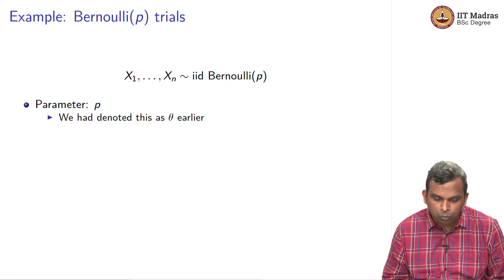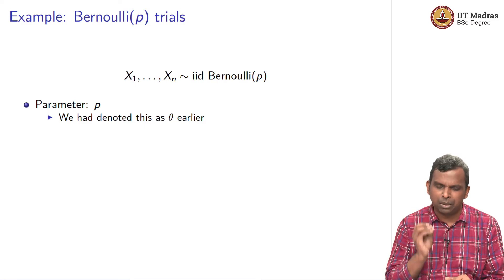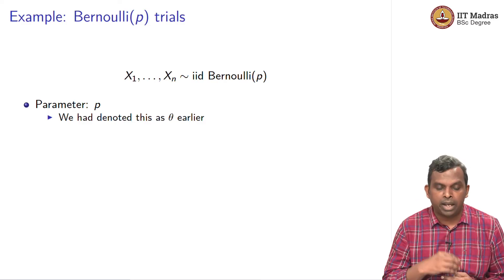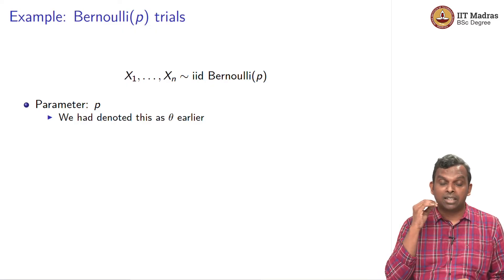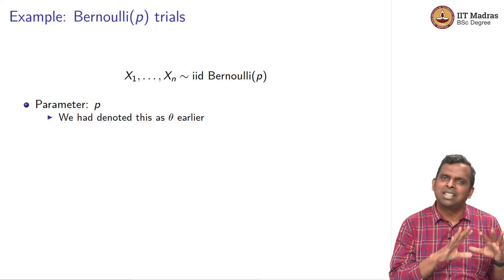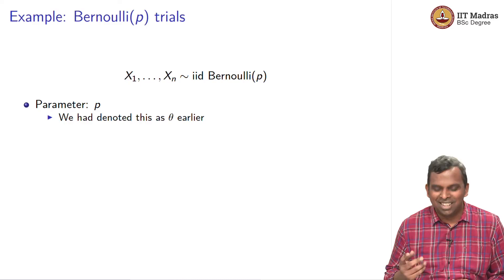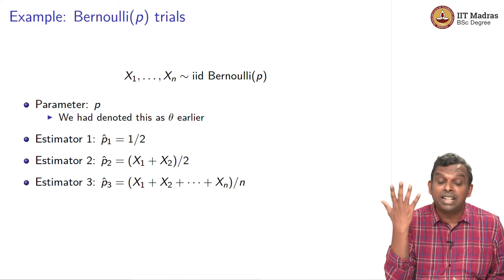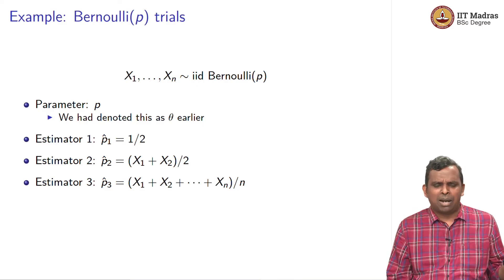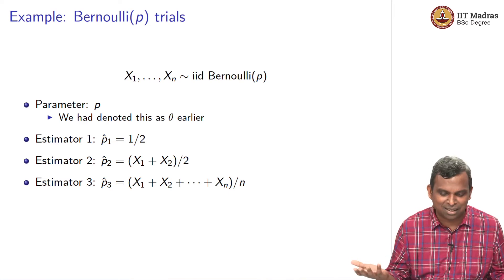Here is an example. I will keep going back to Bernoulli-P trials over and over again — it is a very simple example but very useful. X1 through Xn are IID Bernoulli-P, the parameter is p. In general when it is unknown I will call it theta; in a specific case like Bernoulli, the parameter is p. Here are three different estimators. All three are valid estimators — remember the estimator is some function from the samples to the reals, and as long as it gives you that, it is a valid estimator. Whether it is a good estimator is a different question.